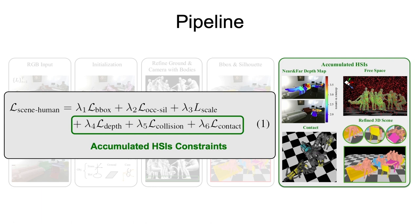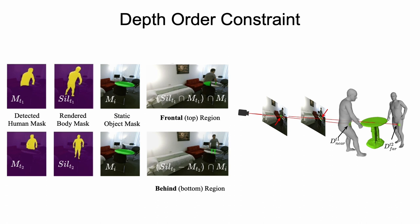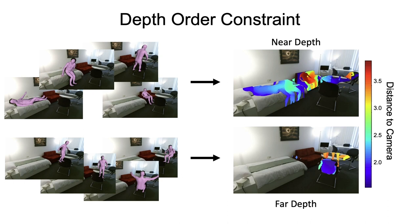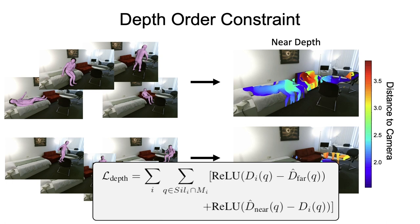First, depth order constraint. Humans that move in a scene are occluded or occlude objects. We exploit this to constrain the depths of the objects in the scene. Specifically, all frontal bodies provide the near-depth range for objects, while all behind bodies provide the far-depth range. We constrain the depth of a projected object to lie in the corresponding range.